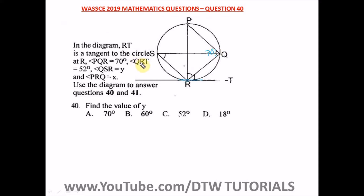Angle QRT — that's this angle here — is 52 degrees. Angle QSR is equal to y, an unknown which we are going to find. And angle PRQ, this angle here, is x, also unknown.